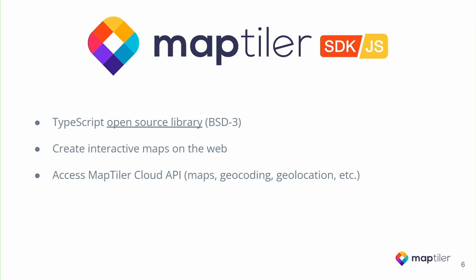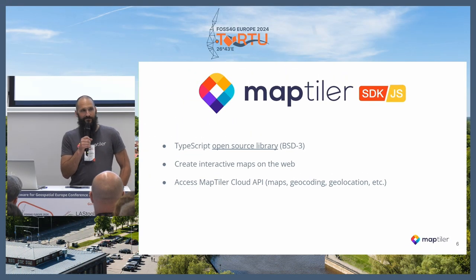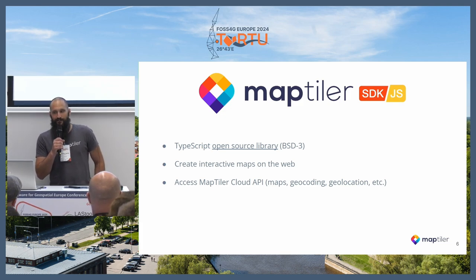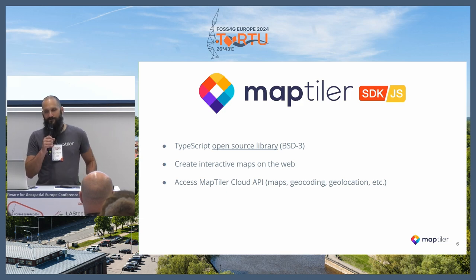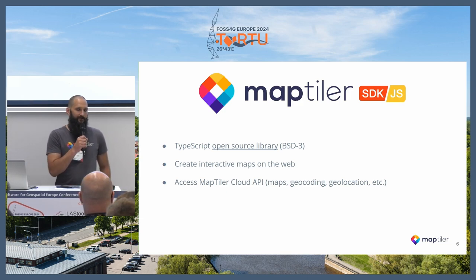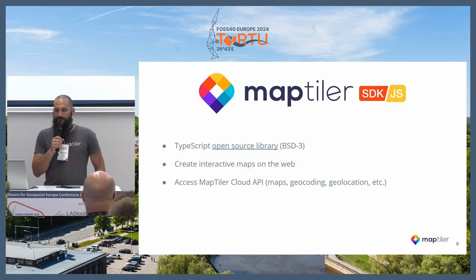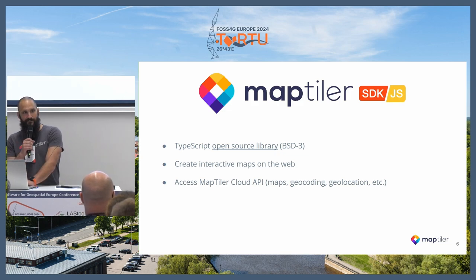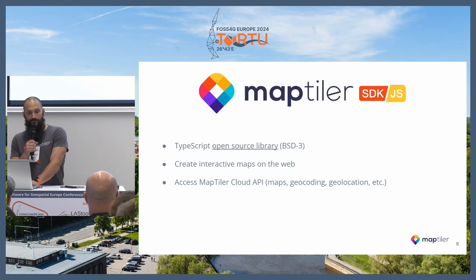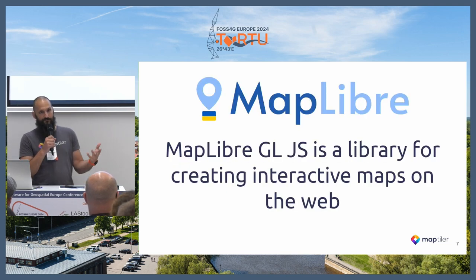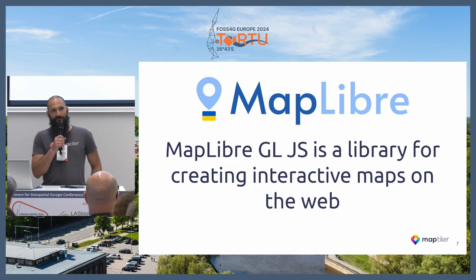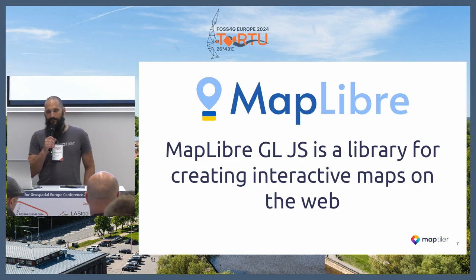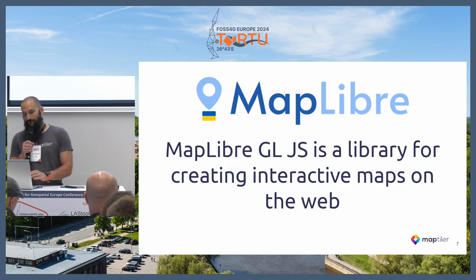What is MapTiler SDK? It is an open source TypeScript or JavaScript library licensed under the BSD-3 license. It helps you create interactive web applications or map applications on the web. It is originally designed to easily access the MapTiler Cloud API for maps, geocoding, and other services. MapTiler is, obviously, a for-profit company, so we are building tools to help our customers communicate with the APIs. MapTiler SDK sits on top of — or on the shoulders of — the MapLibre project, of course.